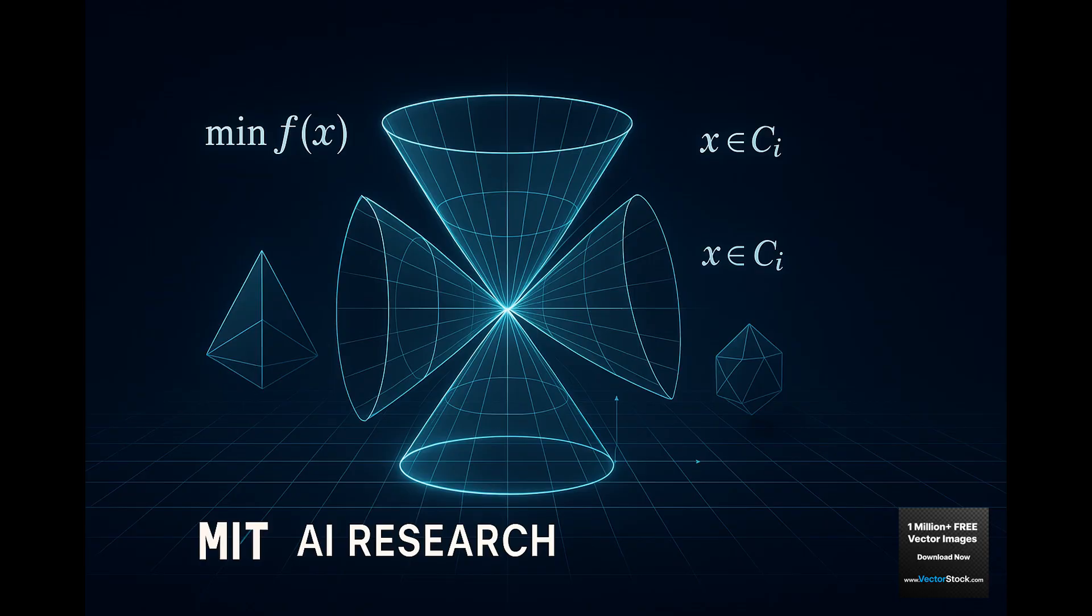Imagine all your possible solutions are spread out and you use polyhedral theory to divide this space into different cones. Cones, like literal geometric shapes. Exactly. Each cone represents one specific optimal strategy. So data collection is no longer about sampling everything. It's about finding boundaries. Boundary resolution. You only collect the absolute minimum data you need to figure out which cone the true answer lies in.